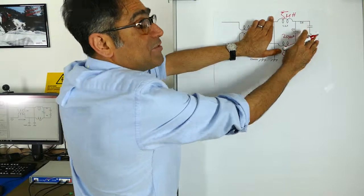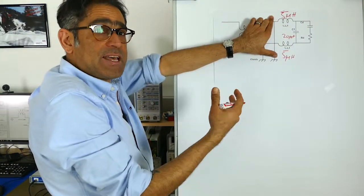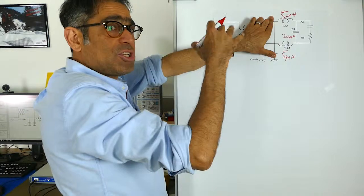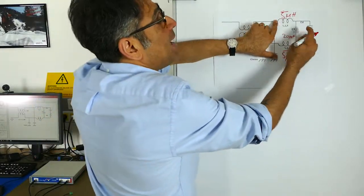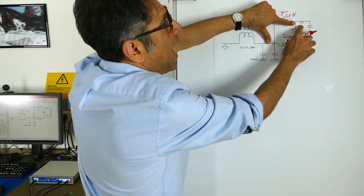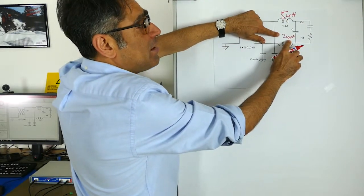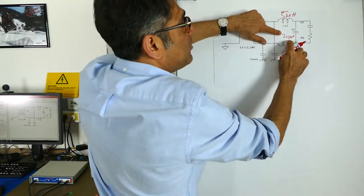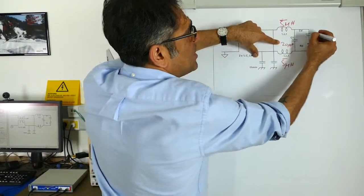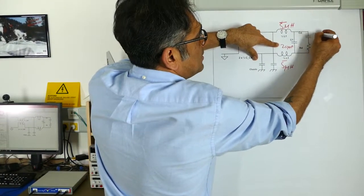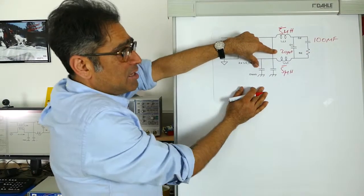In one of the previous videos we said that we needed a damping resistor and a damping capacitor to reduce the Q, and that was for stability purposes. We said that the damping capacitor had to be five times bigger than the capacitor that we have. Therefore if this is 20 microfarads, I know that the damping capacitor is going to have to be around 100 microfarads.